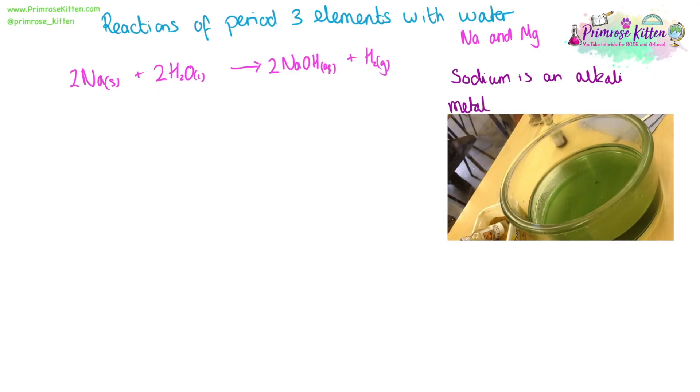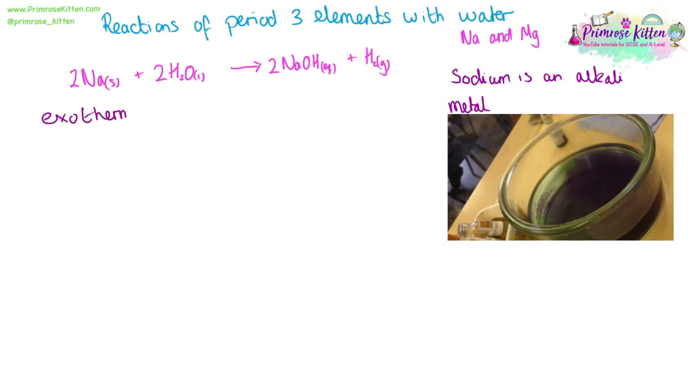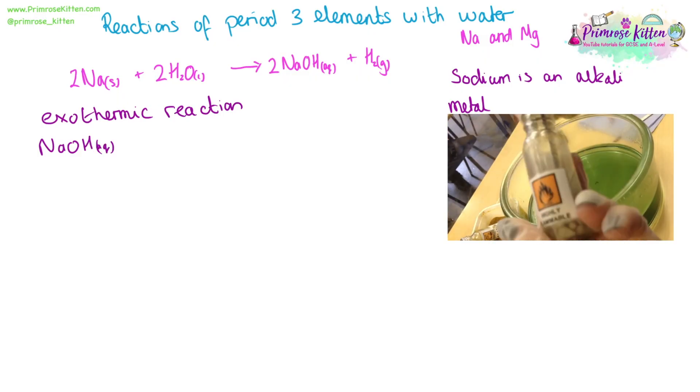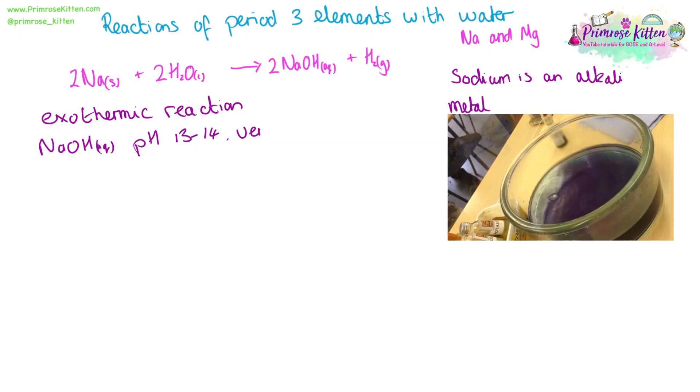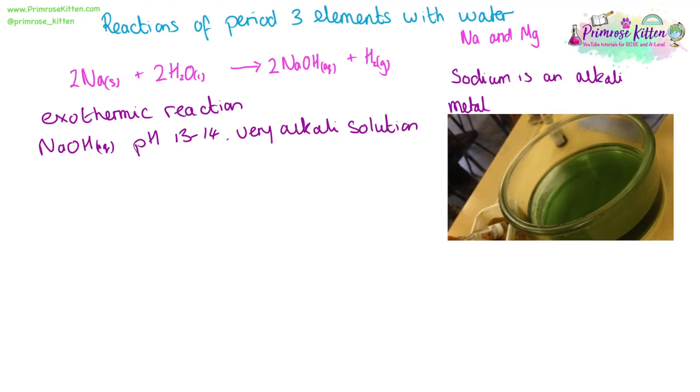So you may be, hopefully, familiar with this practical, which we use to wow you lower down in the school. It is a very exothermic reaction that will take place. So you might see flames, you might see fizzing happening. Sodium hydroxide is going to be very, very alkali. So with the green indicator here, you see the change in color to a blue-purple color, giving us indication that the pH is 13 to 14. It will give us a very alkali solution. We will also see fizzing and moving around as hydrogen gas is evolved.